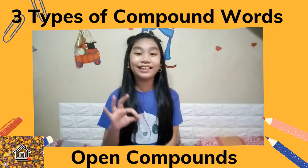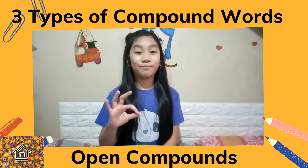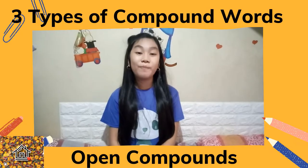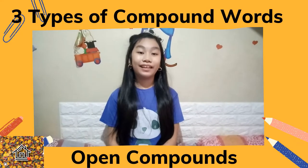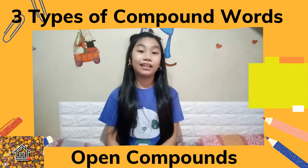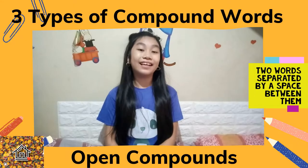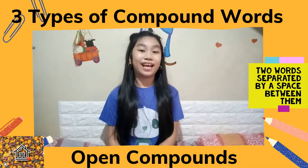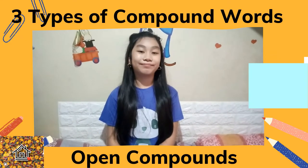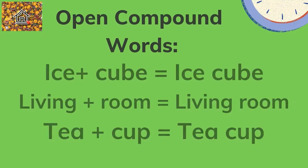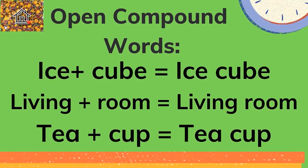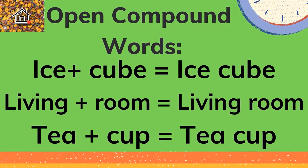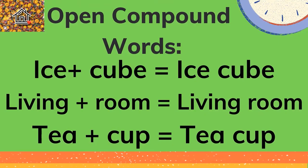There are three types of compound words. The first one is the open compound. These are spelled as two words and separated by a space between them. Examples of open compound words are ice cube, living room, and tea cup.